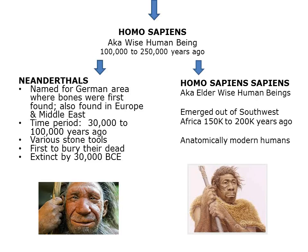After Homo erectus, we move into Homo sapiens, otherwise known as the wise human being, and they emerged about 250,000 years ago. These folks gave way to two other groups. The first group are the Neanderthals, named because they were found in the Neanderthal region in Germany, but their bones are also found throughout Europe and the Middle East. They were active 30,000 to 100,000 years ago.